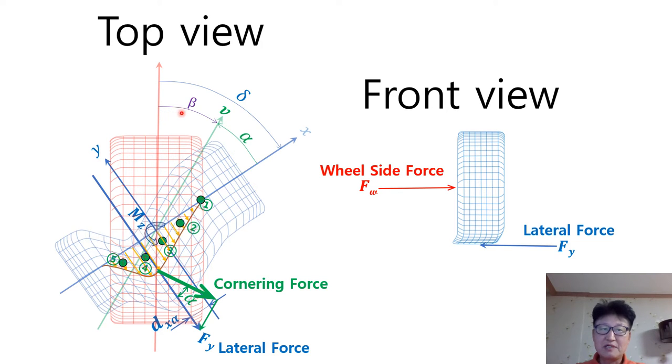When we turn the tire with the steering angle delta, side slip angle alpha, and the lateral force F sub Y here are produced in response to wheel side force F sub W. The wheel rim is heading for positive X axis, but tire is moving along V axis. The tire deformation due to difference between X and V axis.